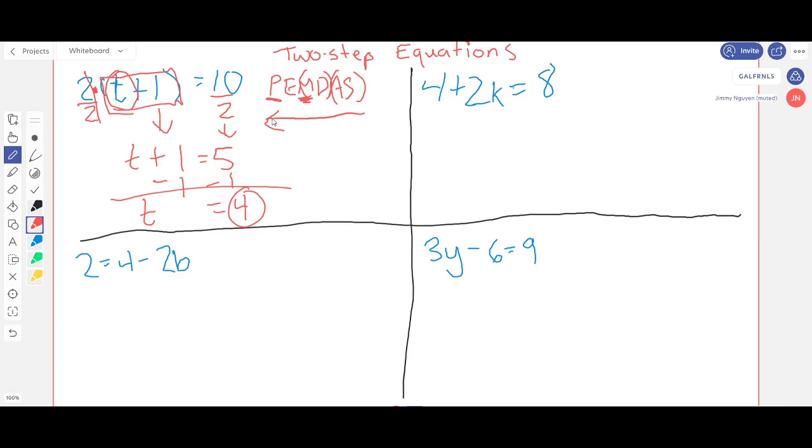So in this example, even though the variable's on the other side of the equal sign, we still solve it the same way. Here we have multiplication and here we have subtraction. According to PEMDAS going backwards, subtraction goes before multiplication which is here.